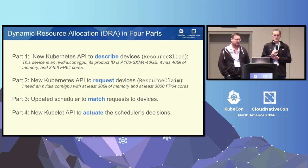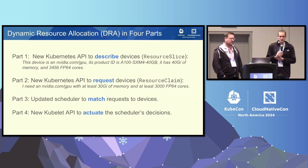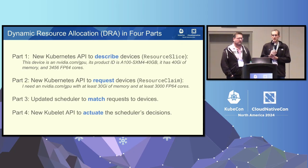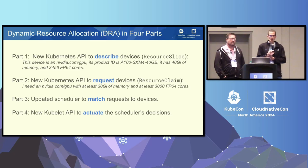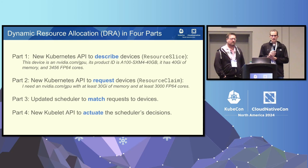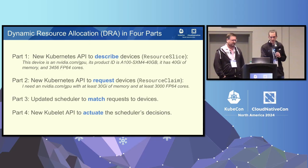The second part is a resource claim — that's what users create when asking for an NVIDIA GPU. They can specify that their workload needs a certain amount of RAM and are guaranteed to get that. Then the magic happens in the scheduler, where we match the requests in the resource claims against the information provided in the resource slices. As part of pod scheduling, these objects are set up so the kubelet, when it sees a pod that needs resource claims, involves the DRA driver and gets the hardware ready for the pod.